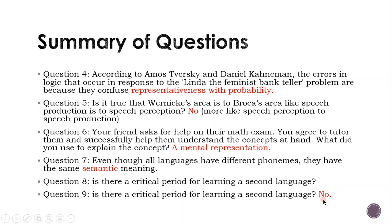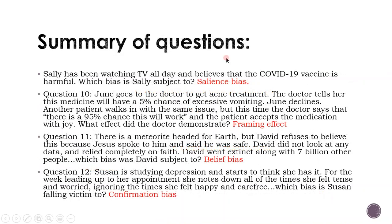Is there a critical period for learning a second language? We found out there is not — there are just different ways that people learn. You can also factor in that children have more time to learn a second language than an adult who has a job and probably has children as well. Then we looked at salience bias, where we accept information which is more prominent, contrasted with confirmation bias, where we only accept information that aligns with our beliefs.